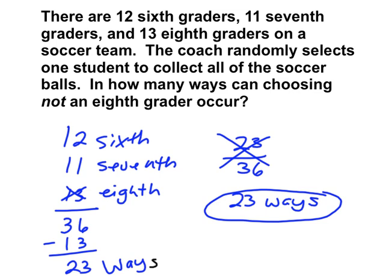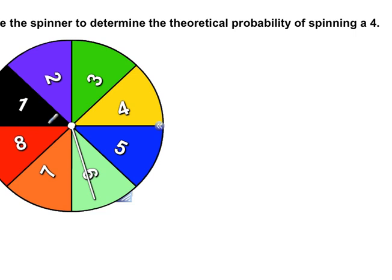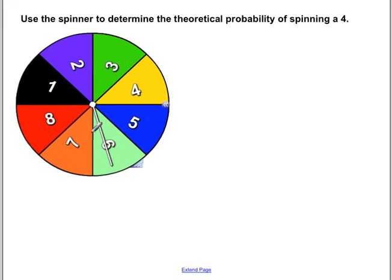Some of you might have written it over 36, but actually it's asking you for how many different ways, not the probability, but how many different ways. So this would not be the right way to answer this question. It would just be 23 ways would be the answer. All right, moving on to the next question.